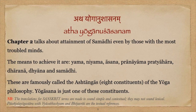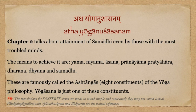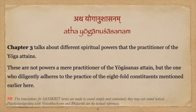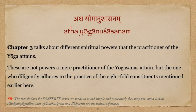The second chapter talks about attainment of Samadhi even by those with the most troubled minds. The means to achieve it are Yama, Niyama, Asana, Pranayama, Pratyahara, Dharana, Dhyana, and Samadhi. These are famously called the Ashtangas — the eight constituents of the yoga philosophy. Yogasana is just one of these constituents. The third chapter talks about different spiritual powers that the practitioner of yoga attains — not a mere practitioner of Yogasanas, but one who diligently adheres to the practice of the eightfold constituents mentioned earlier.